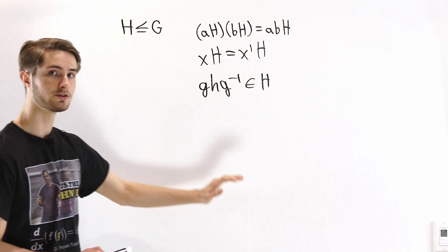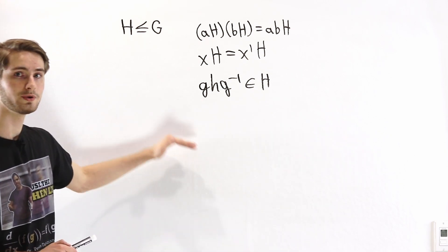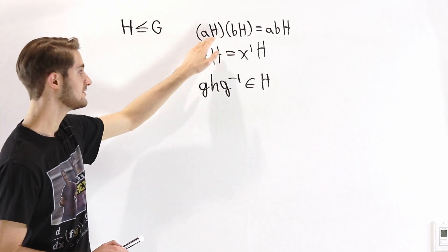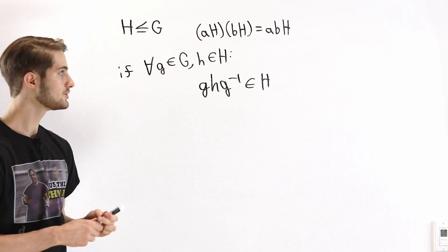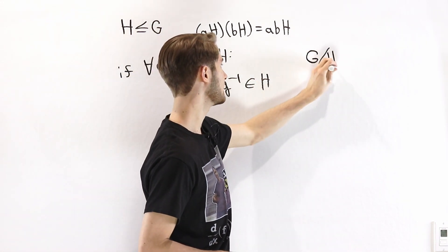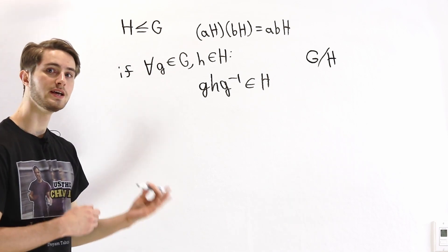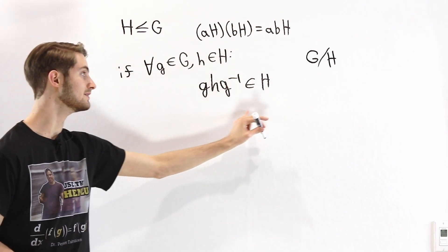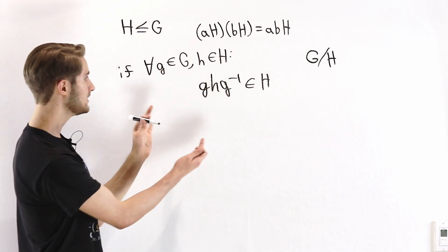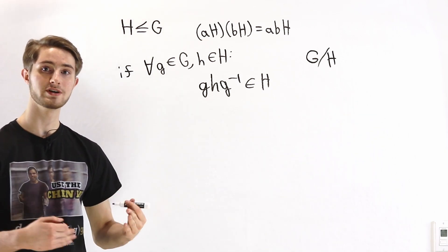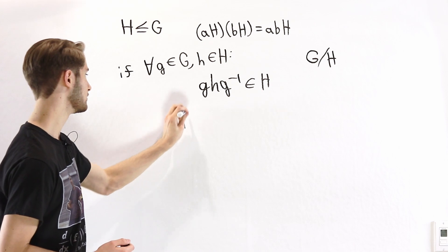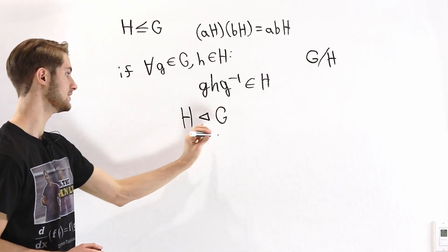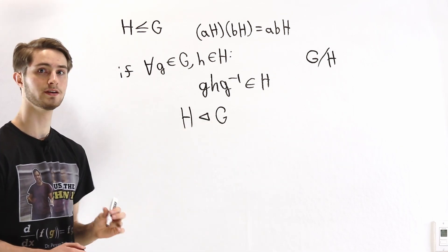If this condition is satisfied, we can follow that reasoning all the way back to show that multiplication is defined for every single pair of elements in the group. So the quotient group G mod H has well-defined multiplication if and only if for every element in the group and every element of the subgroup, this conjugation condition is satisfied. Because this is related to whether a subgroup can create a quotient group, it's important enough to give it its own name. When this condition is satisfied, we say that H is a normal subgroup of G, written with a triangle pointing towards the subgroup.